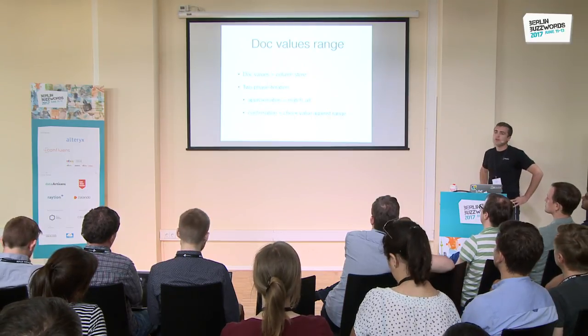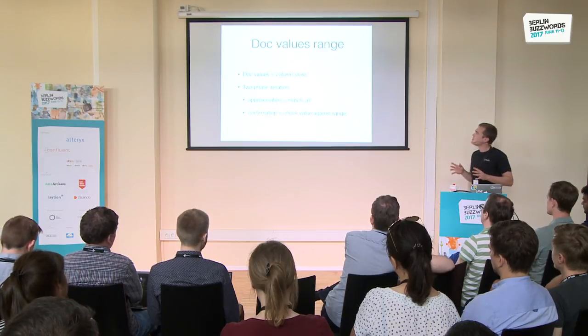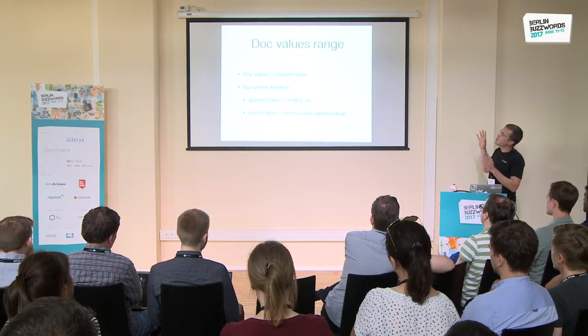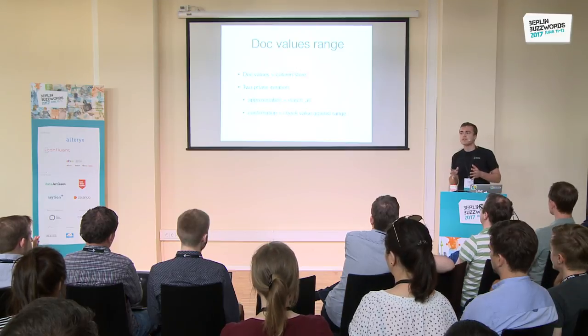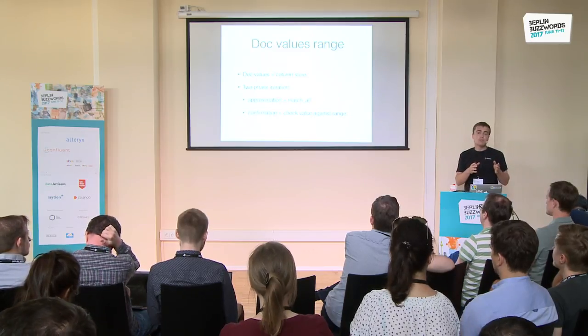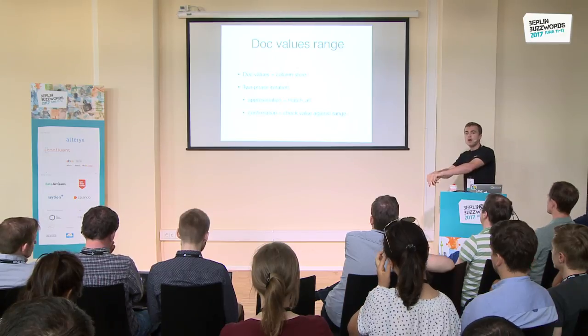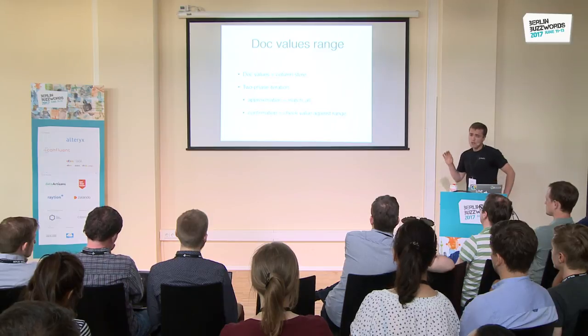There is another way to run range queries with Lucene. We have another data structure encodable in the index called doc values. Doc values is a fancy name that means we have a way to store a columnar representation of your data in the index. That columnar representation can be used to run range queries using two-phase iteration. As an approximation we use a query that matches everything — a match-all, just like we did for scripts — and as a confirmation we use doc values to read the value for a particular document and check whether it's in the range. To be clear: using doc values to run ranges all the time is, in a majority of cases, a bad idea, because if you want to find all documents that match a range you have no choice but to do a linear scan.